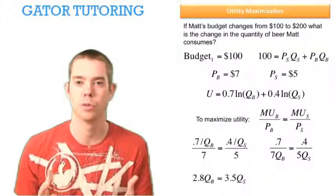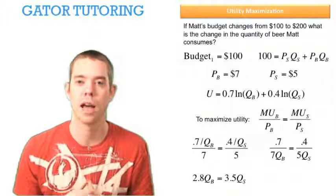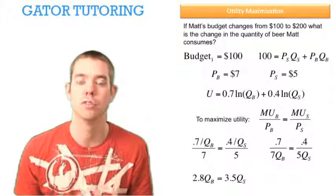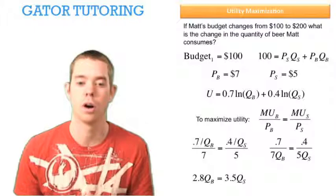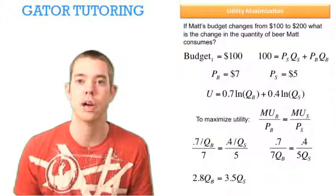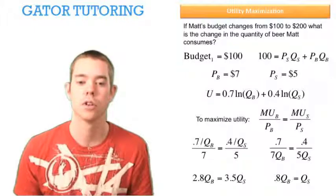And which variable do we solve for? Well, it's asking us about the consumption of beer, so we are interested in solving for QB. So we want to solve QS in terms of QB. So we divide 2.8 by 3.5, and we see that QS is equal to 0.8 QB.